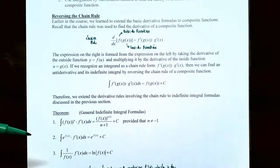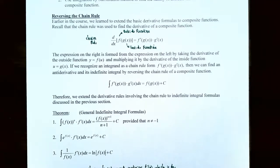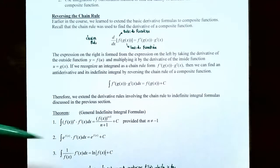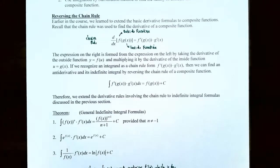Number two: we have the integral of e to the f of x power times f prime of x dx. It's not just e to the x in the integrand — it's e to a function, and the inside function is f of x. f prime of x occurs as the derivative of the inside function in the integrand. Let's recall the formula from the previous video for the exponential function: if we had e to the x, the antiderivative was e to the x.